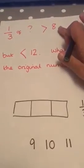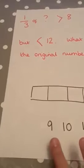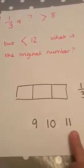It can't be 8 because it's got to be more than 8 and it can't be 12 because it's got to be less than 12. So it can be 9, 10 or 11.